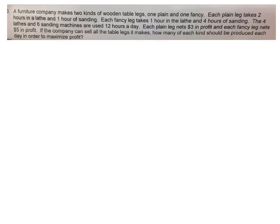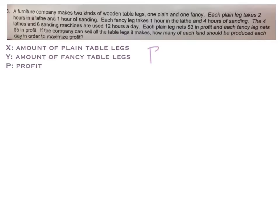All right, so first thing we're going to do is assign our variables. It says how many of each kind. So we need X and Y to represent our plain legs and our fancy legs. I'm going to type it because my handwriting is pretty bad. So X will be your amount of plain table legs, and Y will be your amount of fancy table legs. We also need an objective quantity. So we know that we are trying to maximize profit, so that means we need a P for profit. And the profit equation, P equals, it says each plain leg is $3 in profit, 3X, and each fancy leg is $5 in profit, 5Y. So there's your objective quantity to use later.